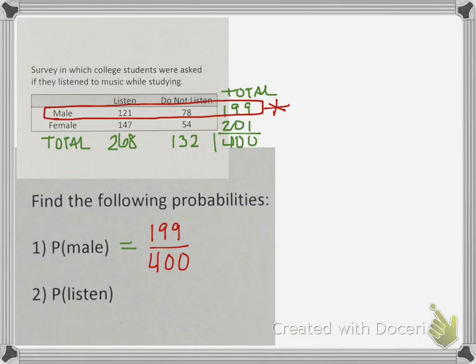It'll be the same thing for those that listen. We're again looking for everybody that listens to music, which in this case is the listen column. And we're again looking for the total. So this will be 268 out of 400. Just check with your instructor as to what form they want these answers in, whether they want them in unreduced fractions or as decimals rounded to a specific location.